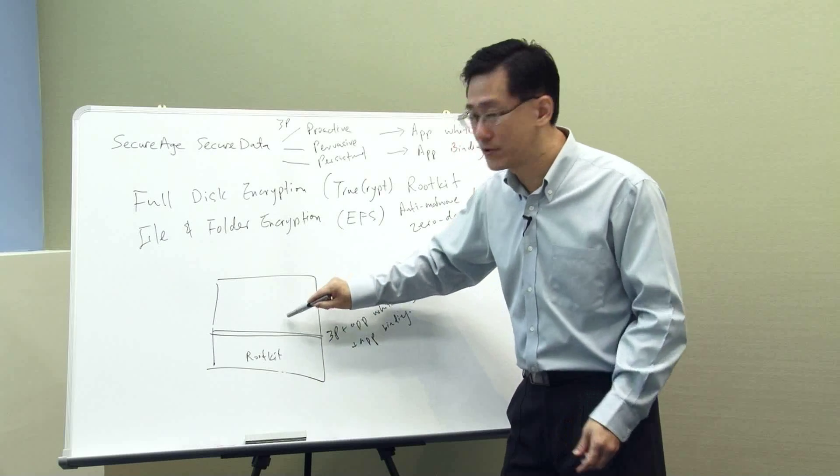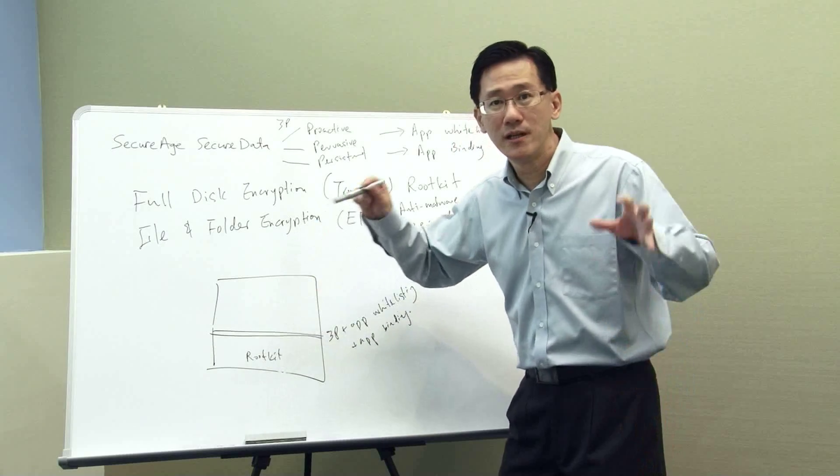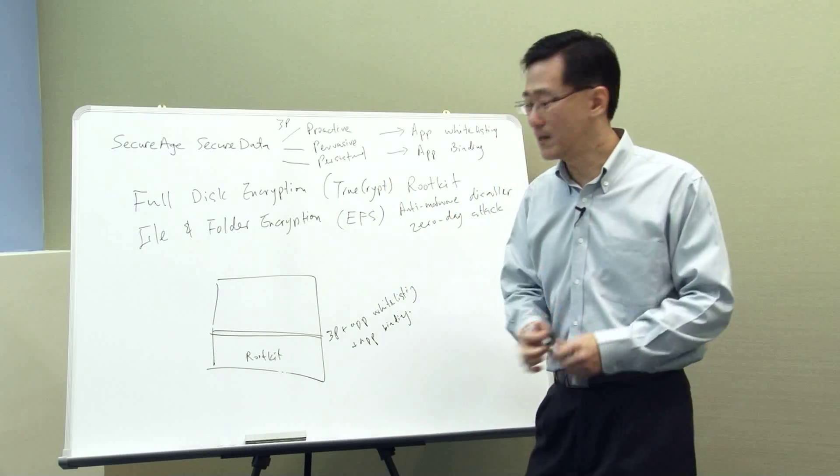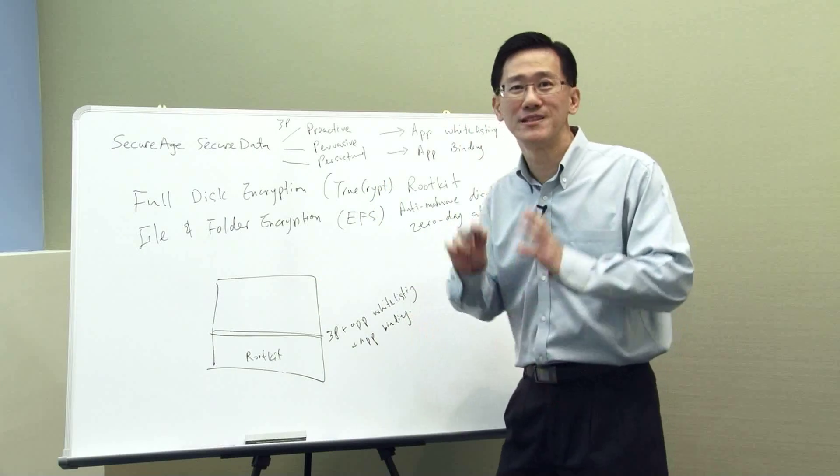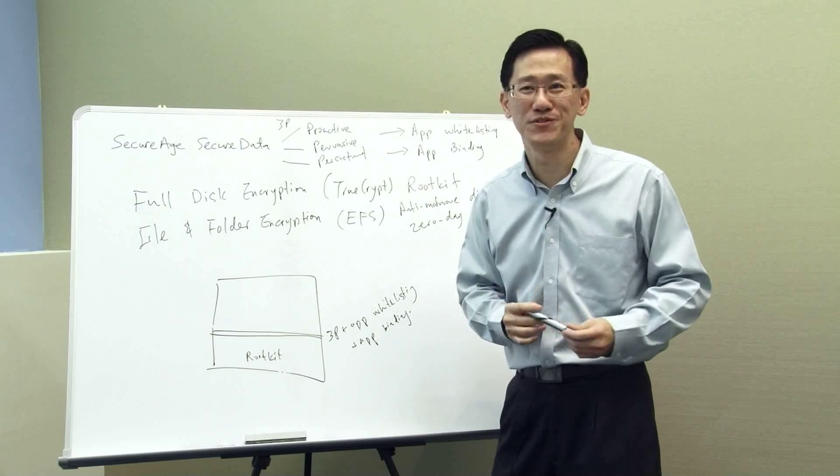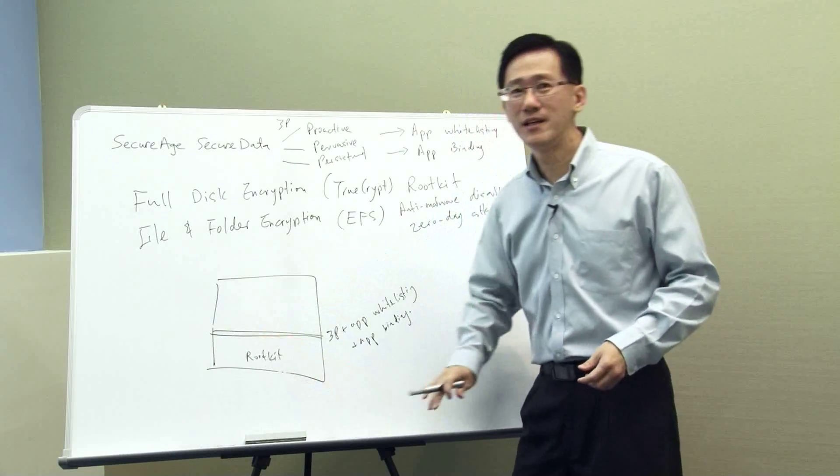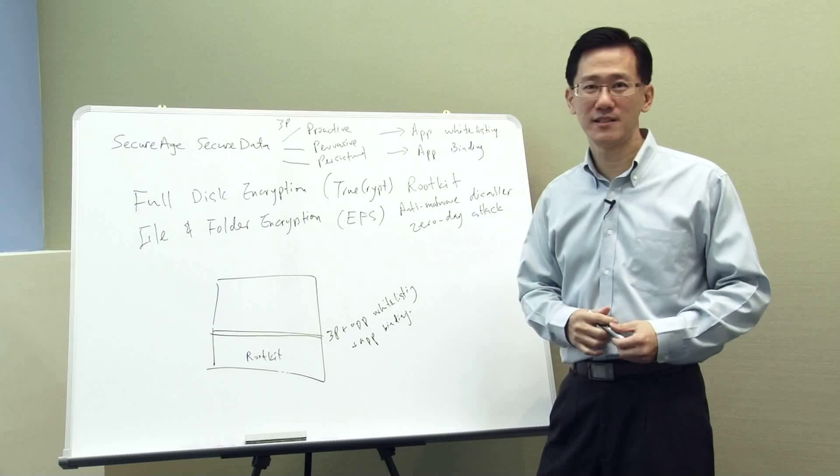If it doesn't pass through our encryption engine, the data they read from the hard drive are all encrypted. If they want to read the plain file, they have to go on top of us, pass through our engine, so that our engine will decrypt for them. But if you are on top of us, our application whitelisting will see you, and therefore they will block you if you are not a trusted application. So we effectively stop rootkit from accessing my sensitive data. So we solve this problem.